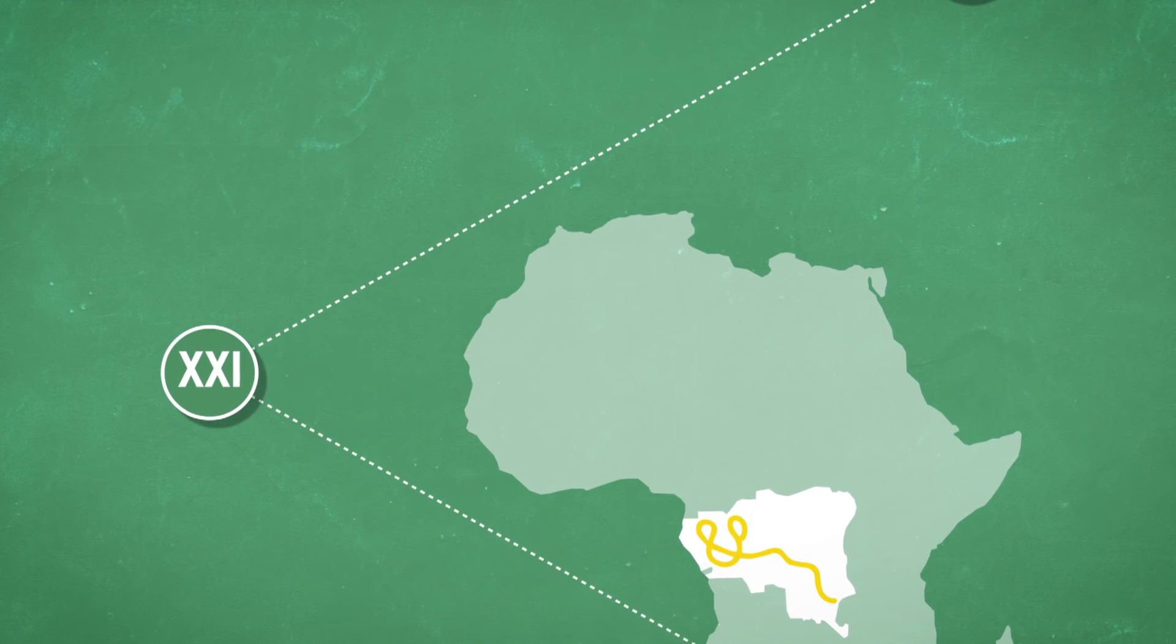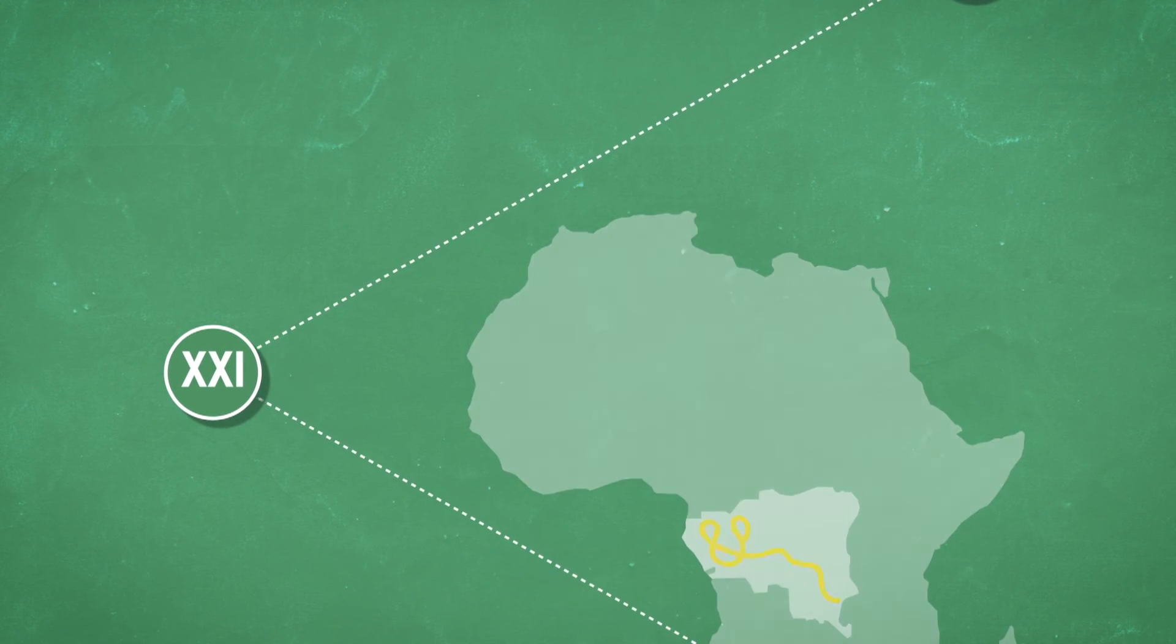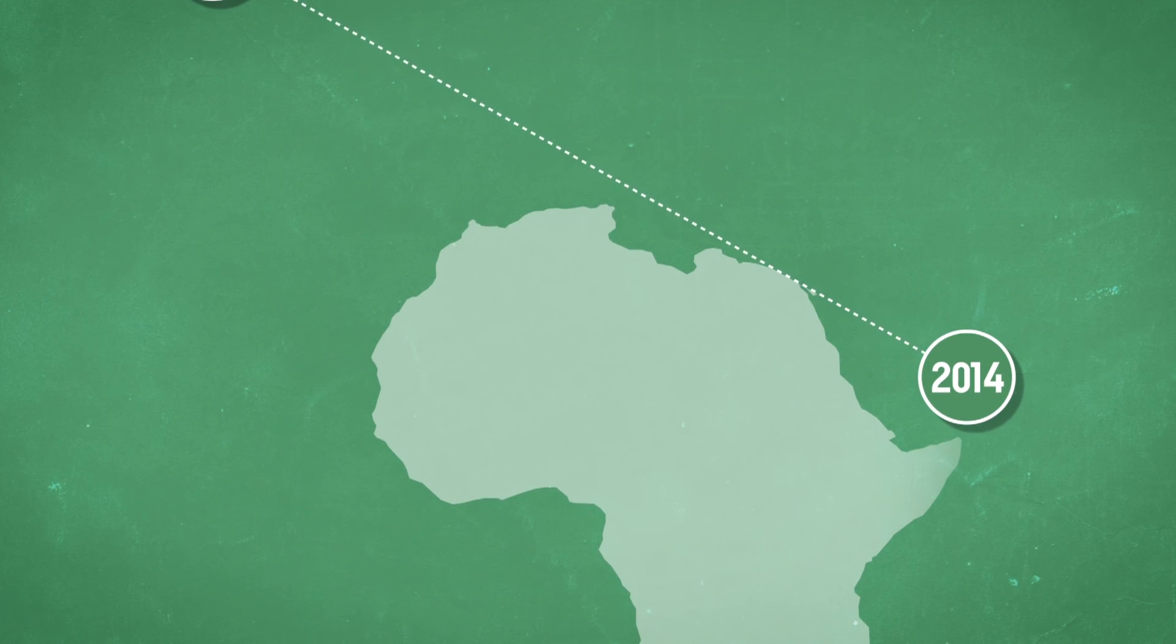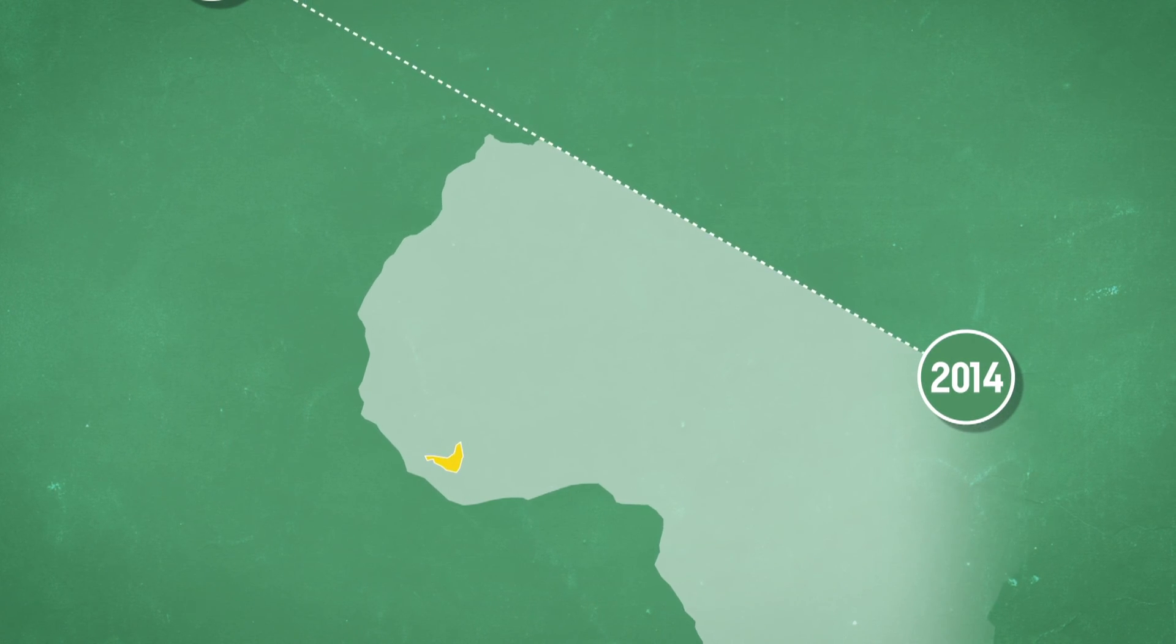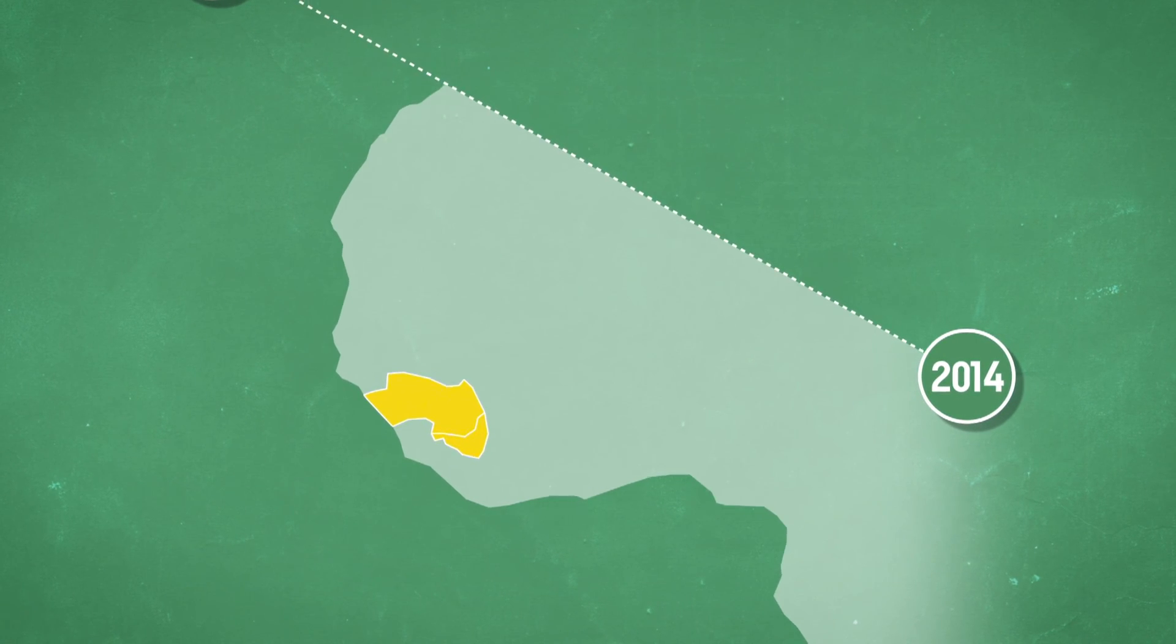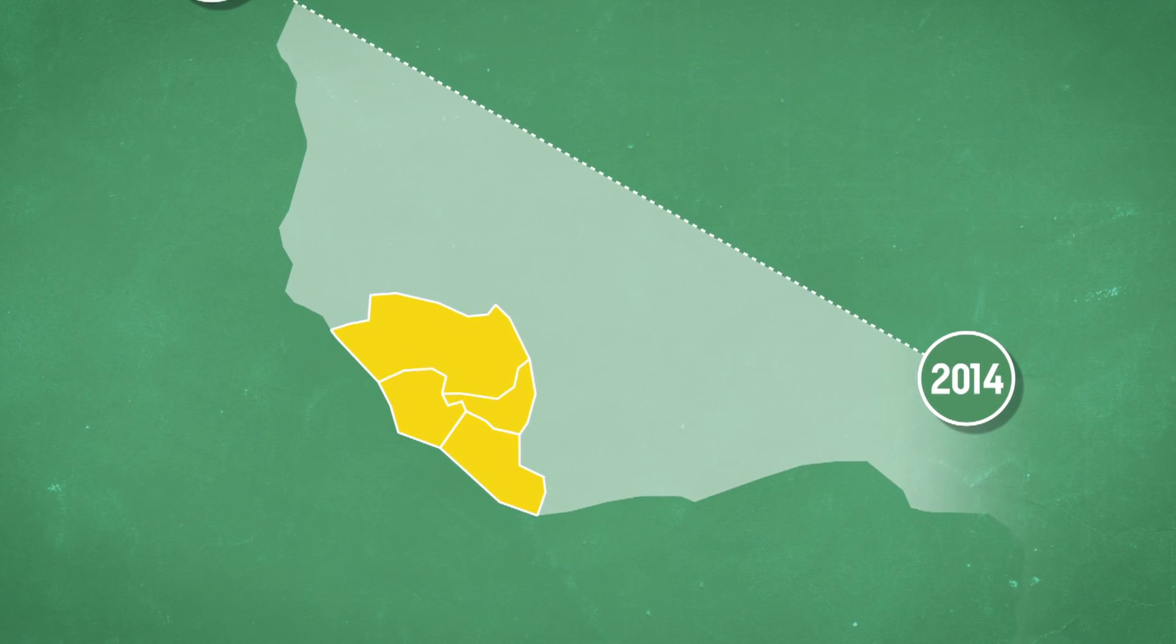All these outbreaks were limited to small areas. Until 2014, when an epidemic of unprecedented scale, originating in Guinea's forest region, reached the capitals of Guinea, Liberia and Sierra Leone in just a few months.